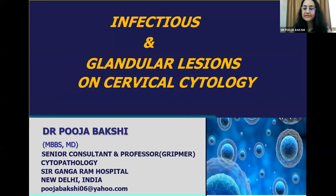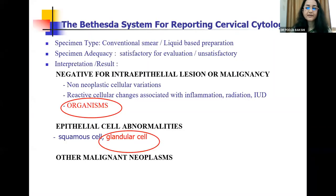Thank you, Dr. Anila for this kind introduction and I thank the organizers for inviting me today to take this talk, which is very close to my heart. We know that cervical cytology has been the backbone of cervical cancer screening for many years, and although the focus is on detection of the squamous intraepithelial lesions, it also includes detection of various infectious organisms and glandular abnormalities. The Bethesda system is accepted worldwide for reporting of cervical cytology, and after giving a report on specimen adequacy, we give a result as either NILM — negative for intraepithelial lesion or malignancy — which includes reactive changes and organisms, and the epithelial cell abnormalities which can be squamous or glandular.